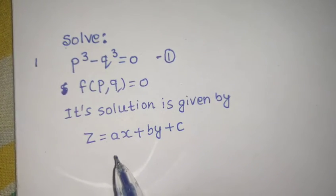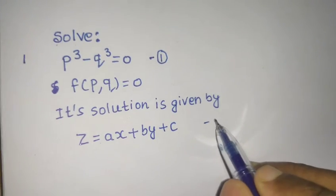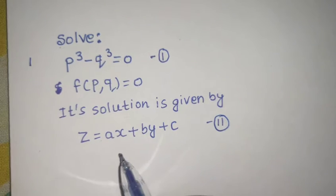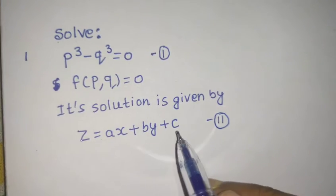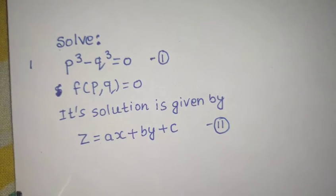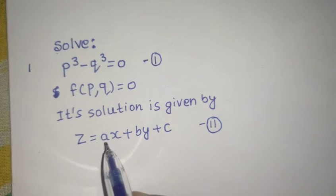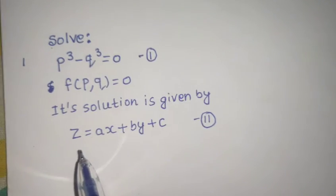Now, what we have to do, let's assume this as equation number 2. Instead of having 3 constants A, B and C, we are now trying to have only 2 constants. Either we will write A in terms of B or B in terms of A.